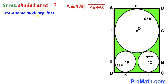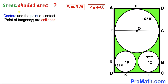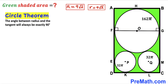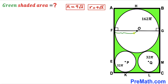Now we draw auxiliary lines. Connecting points F and G through center O — recall that centers and points of tangency are collinear, so F, G, and O lie on the same line. By the circle theorem, the angle between a radius and tangent is always 90°. The segment from O to F is the radius of the larger circle, which is 9√2, and likewise the other radius is 9√2.